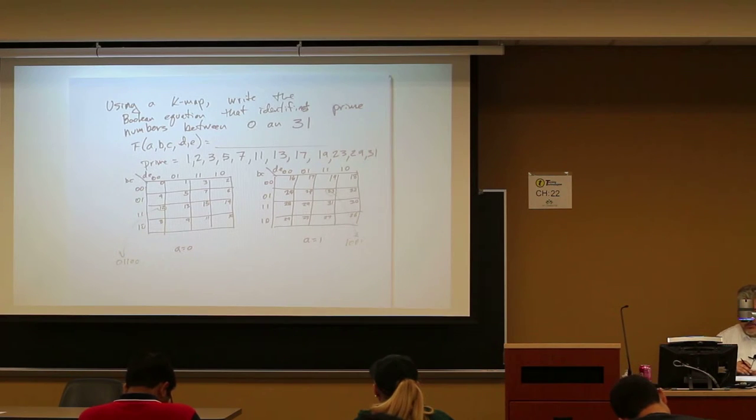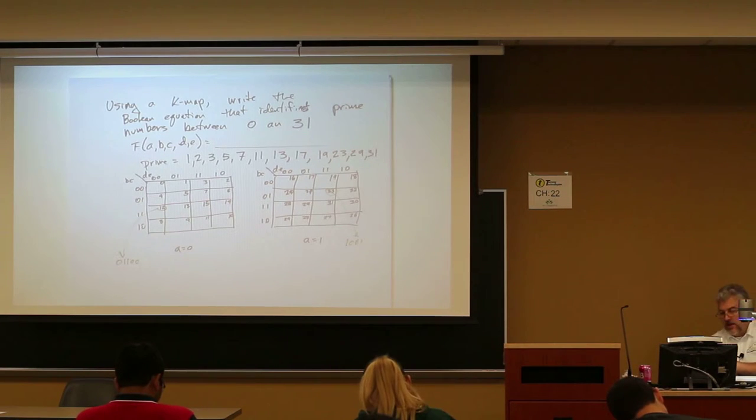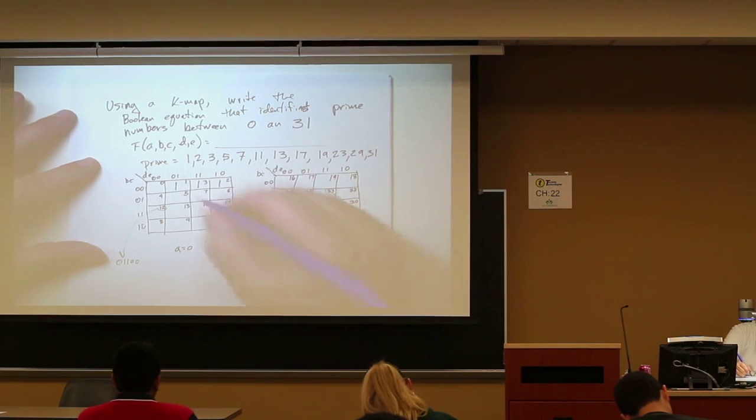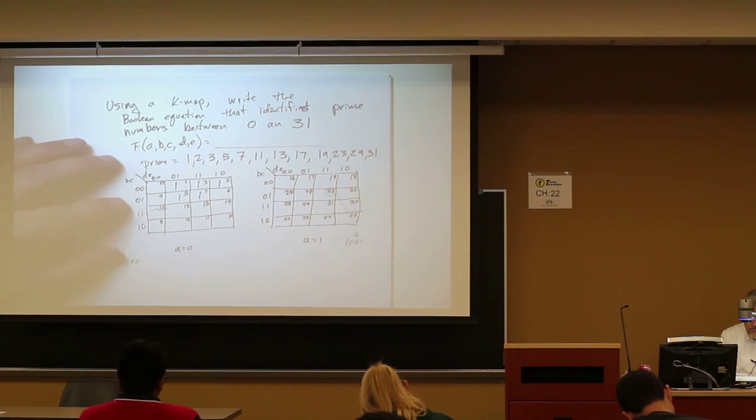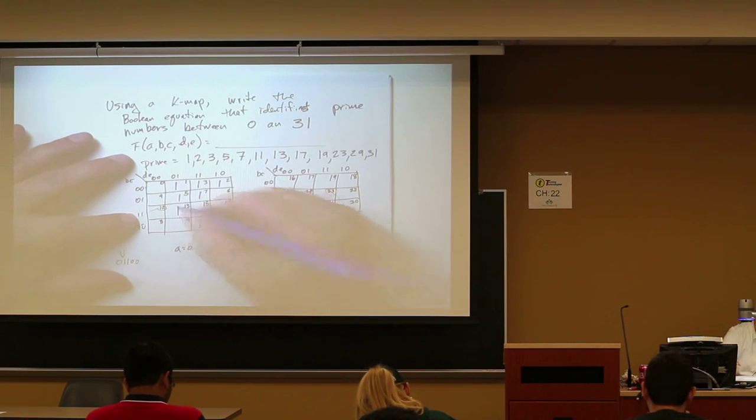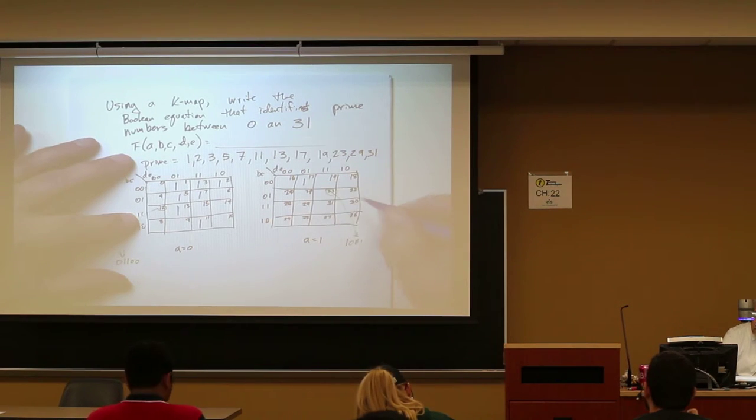And now what remains is to go ahead and put into our table the prime numbers and then we're going to look at our table to see if we can combine things together. So here we go. 1, 2, 3, 5, 7, 11, 13, 17, 19, 23, 29, 31. Wow. This looks kind of messy, doesn't it?